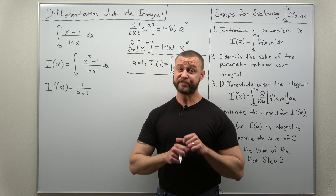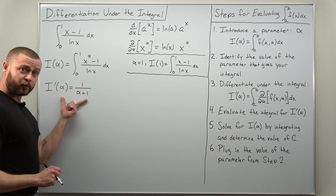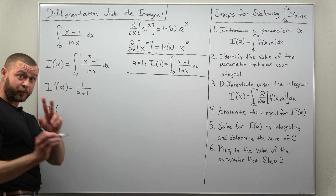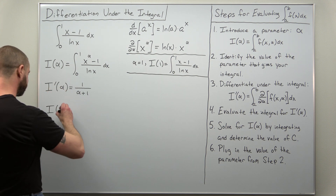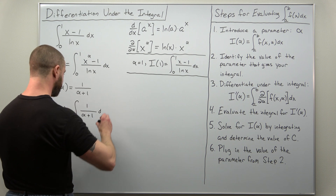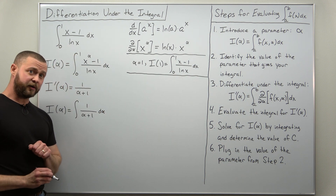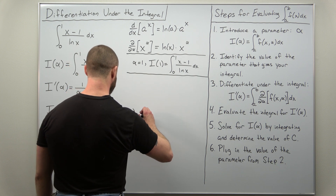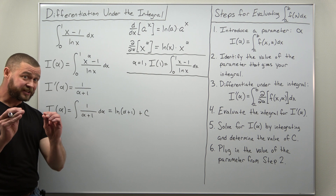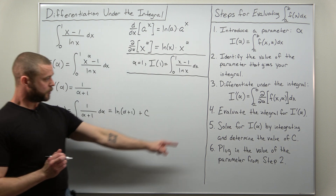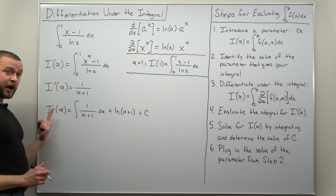Step 4: now that we have I prime, we solve for I by integrating with respect to alpha. Integrating 1/(α+1) with respect to alpha gives us natural log of (alpha plus 1). Since this is an indefinite integral, we include a constant of integration plus C.